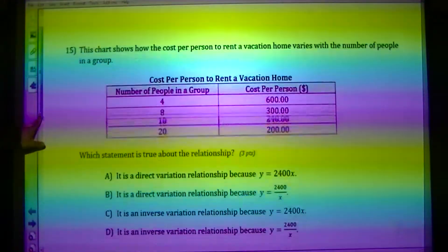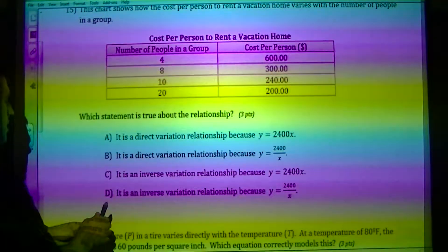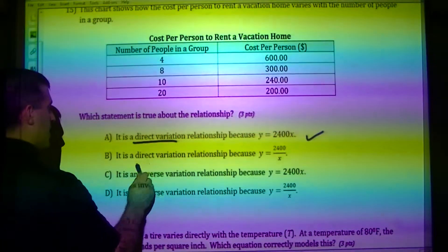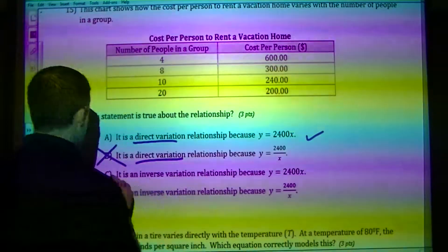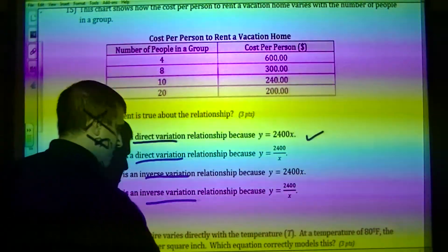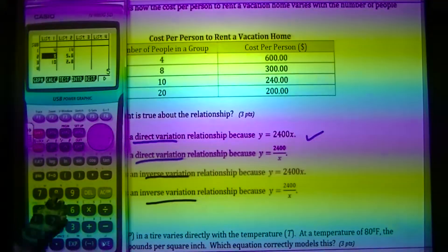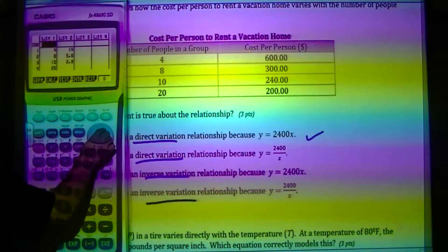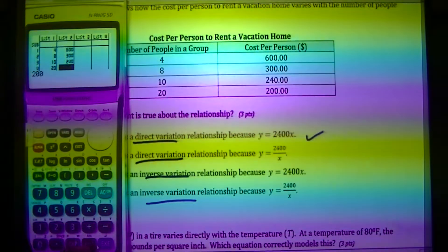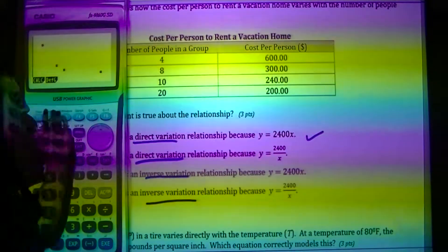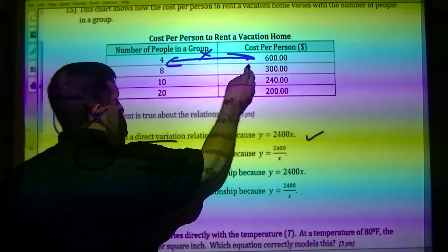Last three questions: identify the correct equation. If it says direct variation, eliminate any inverse equations — you can narrow it down to just A and D. Entering X values 4, 8, 10, 20 and Y values 600, 300, 240, 200. Since the graph goes downward like an inverse curve, it's inverse variation. Multiplying the pairs confirms the constant: 4×600 equals 2,400 — that's the numerator.